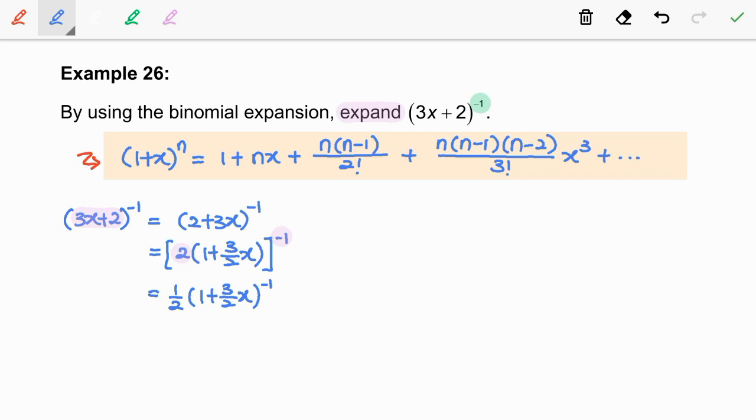Next, we are going to determine x and n by comparing 1 plus 3 over 2x with 1 plus x to the power of n. As we see here, x is equal to 3 over 2x and n refers to the power number which is negative 1.